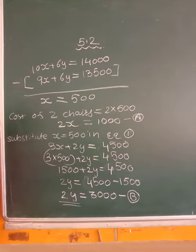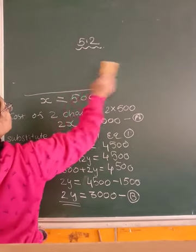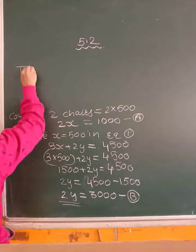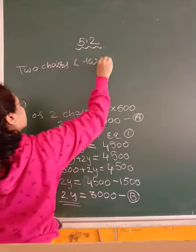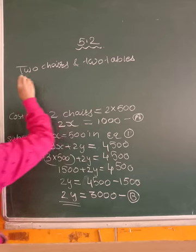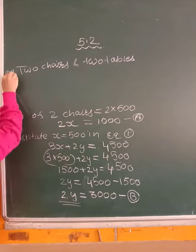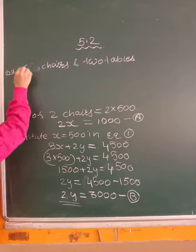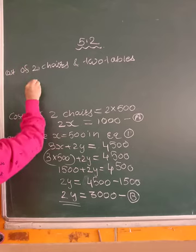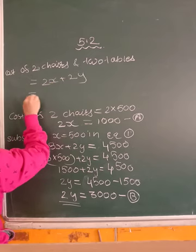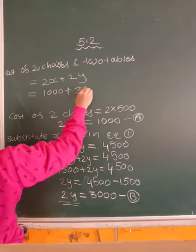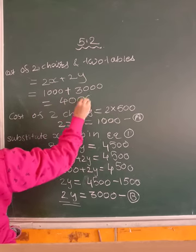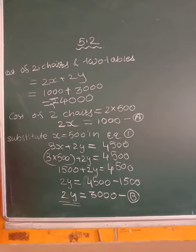So 2x is equal to this. The question asked is, find the price of 2 chairs and 2 tables. So cost of 2 chairs and 2 tables is equal to 2x plus 2y. That is equal to 2x which is 1,000 plus 2y is equal to 3,000. This comes out to be equal to rupees 4,000. Understood everybody?